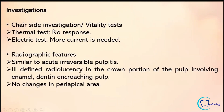For chair-side investigations or vitality testing, there is no response to the thermal test, and for the electric test, more current is required. Radiographic features are similar to acute irreversible pulpitis — there is ill-defined radiolucency in the crown portion involving the enamel and dentin encroaching the pulp, but no changes are apparent in the periapical area.